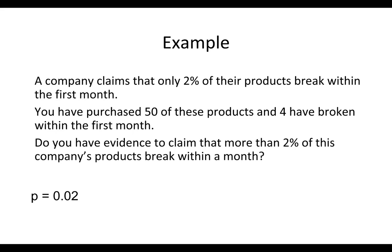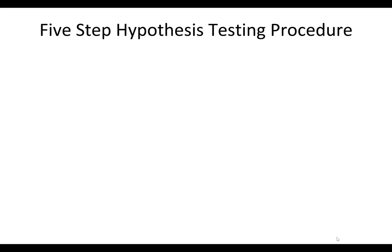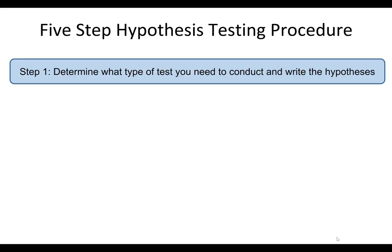Before we start working through the different steps and learning objectives, I want to show you the big picture, which is our 5-step hypothesis testing procedure. The first step is to determine what type of test you need to conduct and write the hypotheses — that means identifying what population parameter you are testing. In this lesson, we're covering tests for a single proportion, single mean, difference in two proportions, difference in two means, correlation, and simple linear regression slopes.